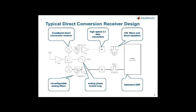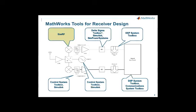The design architecture we'll discuss today is a very typical zero-IF design. Along the top we've got a direct conversion receiver, a high-speed sigma-delta data converter, a decimation filter, and a digital baseband. There's also an analog PLL and reconfigurable analog filters. The reconfigurability part is particularly relevant for multiband designs. At the system level, with the right set of tools, you can design a receiver for a single application or a variety of different applications.